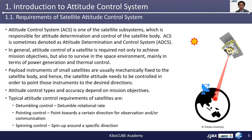Attitude control modes and accuracy depend on each satellite's mission objectives. There are three typical attitude control requirements of satellites. The first is detumbling control, which is to reduce the rotational rate of the satellite body, especially after the separation from the launch vehicle or release from the International Space Station. The second is pointing control, which is to point the spacecraft attitude toward a certain direction for observation and/or communication purposes with the ground station. And the last is spinning control, where spin-up is required to achieve spin stabilization of the satellite.